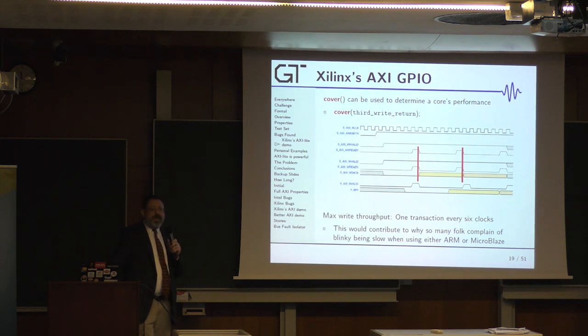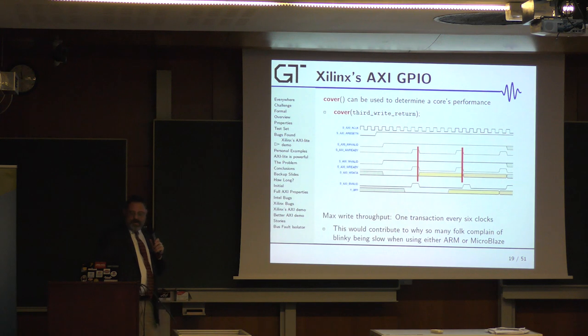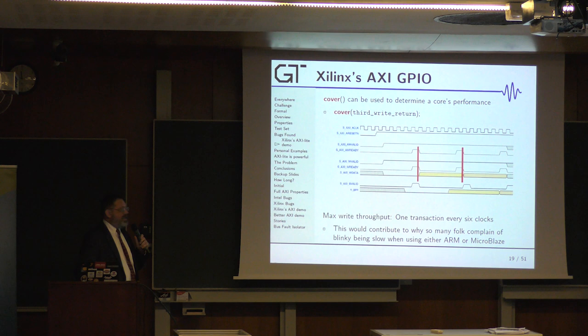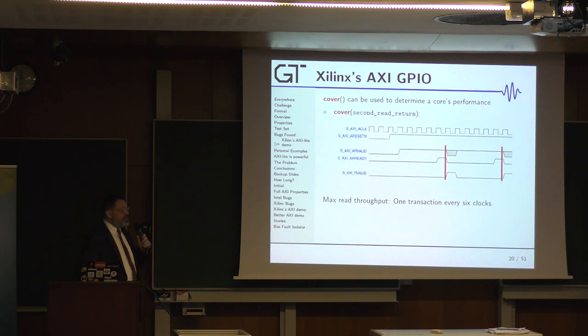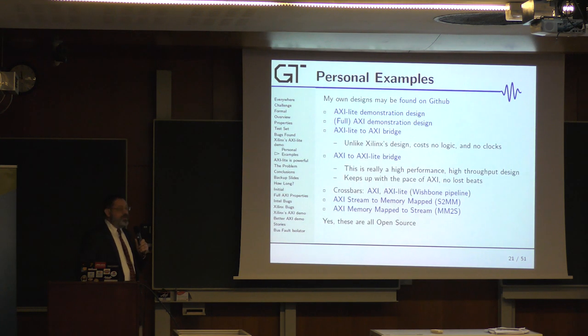Here's an example from their GPIO core. Has anyone ever tried using their GPIO core just to see how fast you can toggle Blinky? It takes six clocks just to go through their core. That's as fast as their core will work. A lot of people complained about how fast Blinky works when using ARM or Microblaze going through this core. There's a read. Still takes another six clocks just to go through their core. You can do a lot better than that.